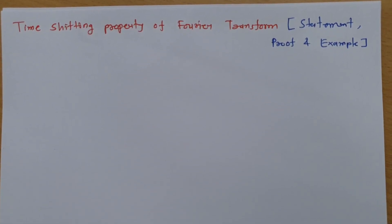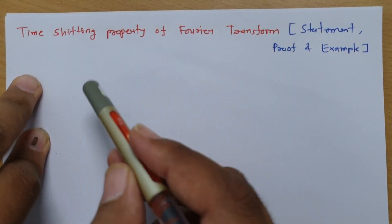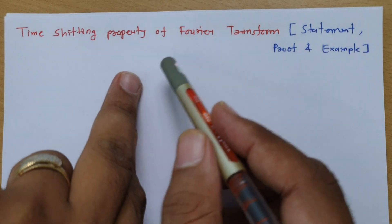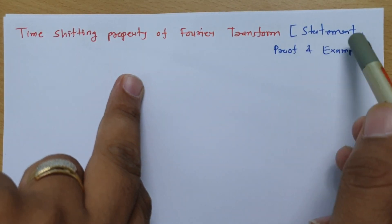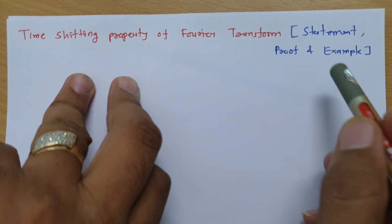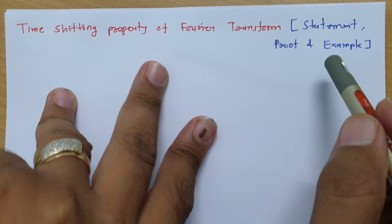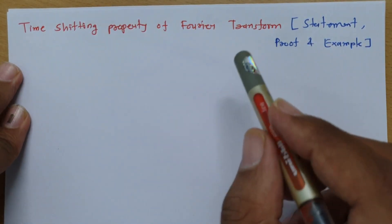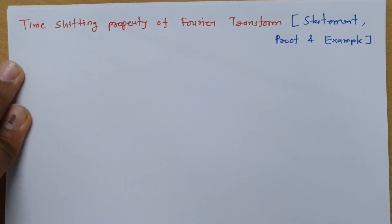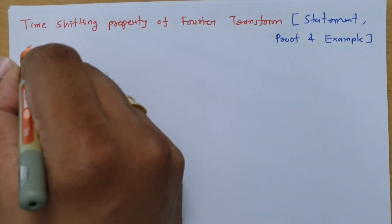Welcome to the signal and system lecture series. In this session, I will explain the time shifting property of Fourier transform. My agenda is: first, I will give you the statement of the time shifting property, then I will derive its proof, and then we will see some examples to understand how to apply the time shifting property in Fourier transform.